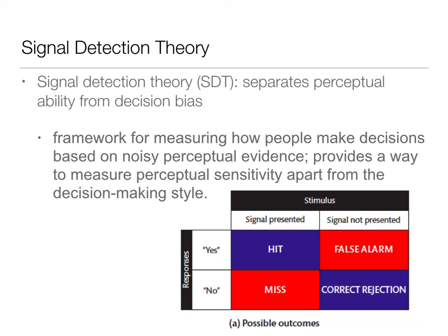In a signal detection theory experiment, the experimenter knows whether they presented the stimulus or not. Half the time they present the stimulus and half the time they don't. When the stimulus is presented and you get it right, that's a hit. When the stimulus was not presented and you say you saw or heard it, that's a false alarm. When the stimulus was presented and you don't say you saw it, that's a miss. And when the stimulus was not presented and you say you didn't see it, that's a correct rejection.